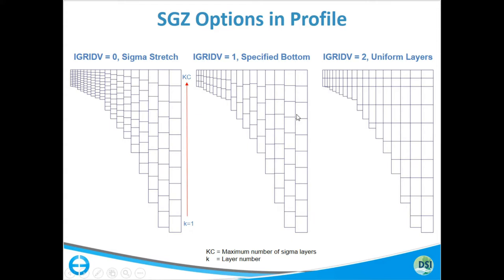One option we call 'specified bottom,' where you're just specifying the bottom active layer in the cells. You can see up here there are three active layers, and it progressively goes down to full ten layers at the deepest part. This cell here is not connected to that cell, and this cell is not connected to that cell. It does allow vertical flow, and if there's denser flow — colder or more dense water for whatever reason — coming down this slope, it can run out into that cell and basically fall down those interfaces.